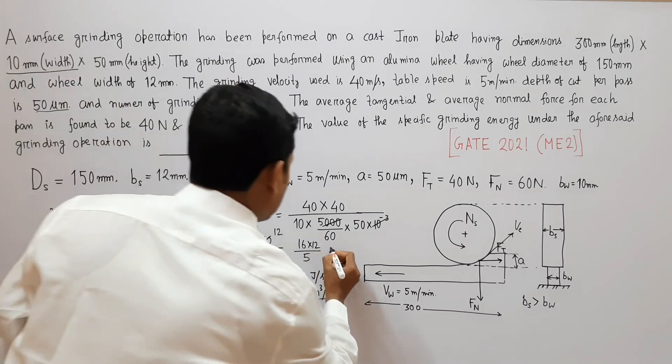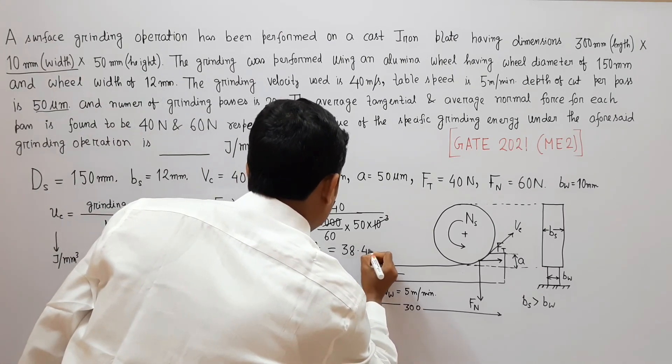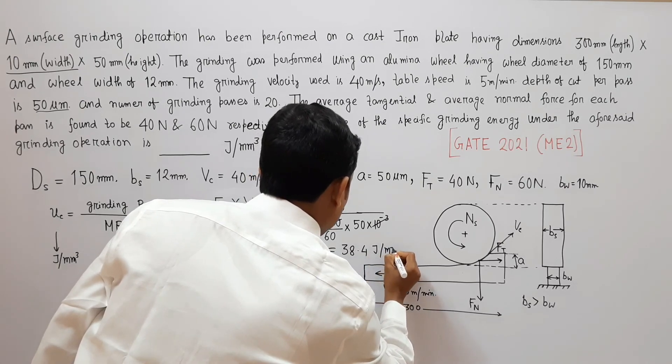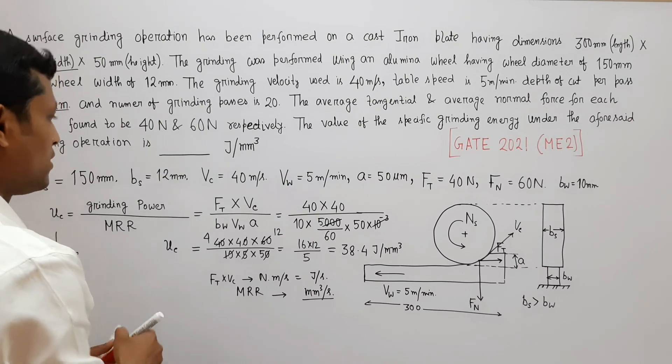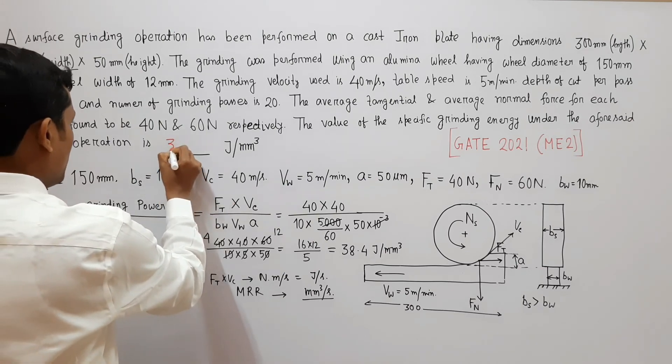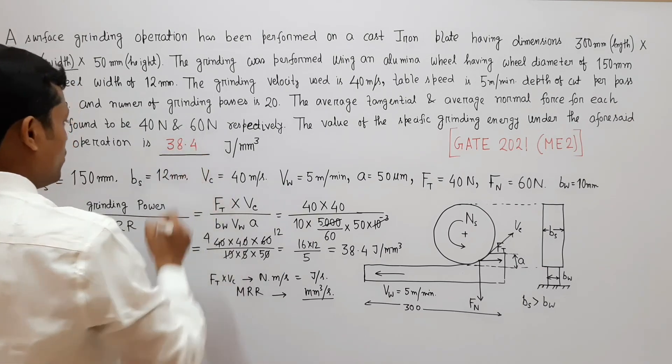So u becomes 40 into 40 divided by 10 into 5 into 50, and if we calculate this that becomes 38.4 joule per millimeter cube. So the answer is 38.4 joule per millimeter cube.